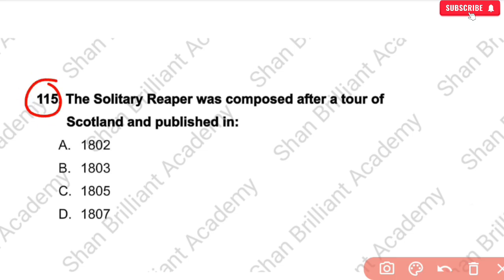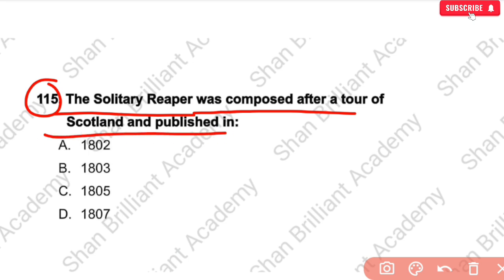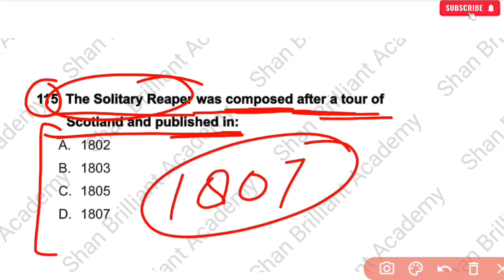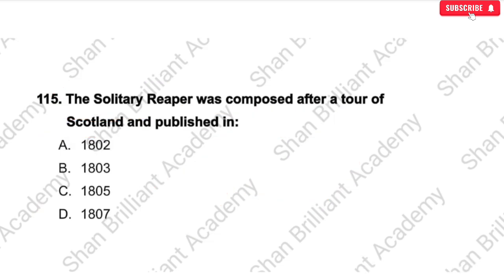MCQ No. 115: The Solitary Reaper was composed after a tour of Scotland and published in — ? It was published in 1807, within Wordsworth's poetry collection Poems in Two Volumes. The Solitary Reaper was published in Poems in Two Volumes in 1807.